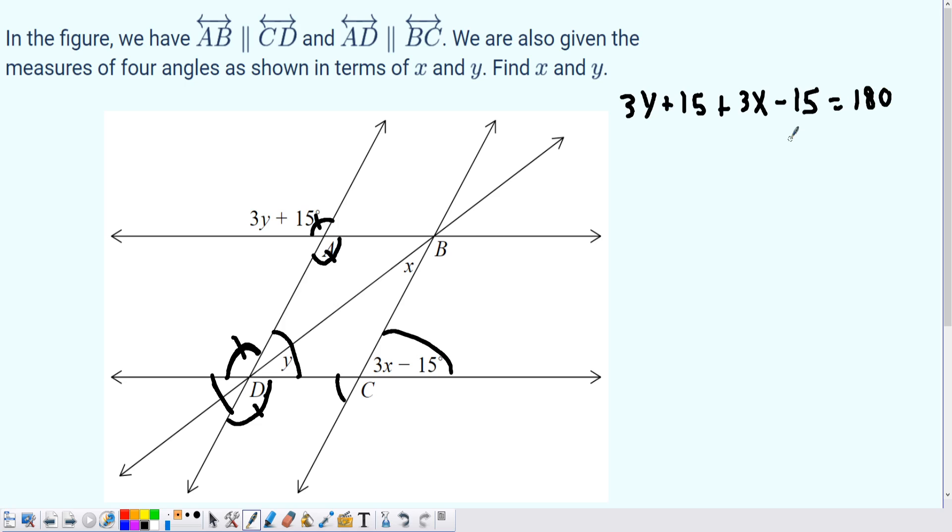Now plus 15 minus 15, easy cancellation, so we get 3y+3x equals 180. I can factor out, I have a GCF of 3, so 3(y+x) equals 180. And then finally we can simplify by dividing 3 on both sides: y+x equals 60.